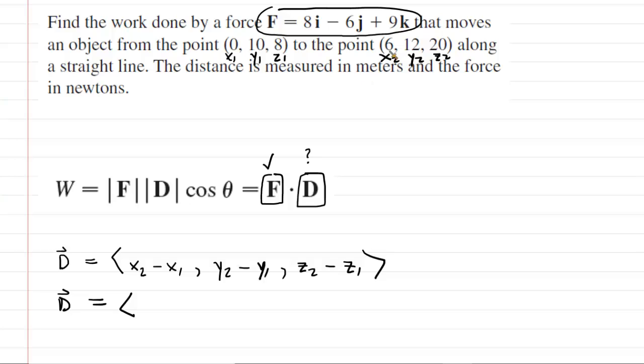We'll do x2 minus x1, so that's 6 minus 0, which is just 6. y2 minus y1 is 12 minus 10, so that is 2. And then z2 minus z1 is 20 minus 8, so that's going to give us 12. So that is our displacement vector.